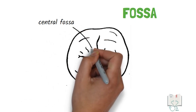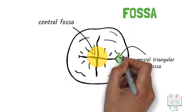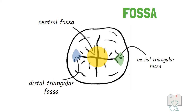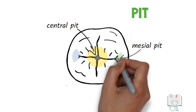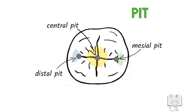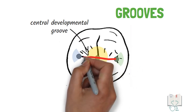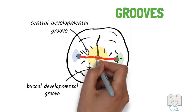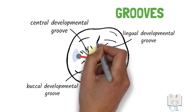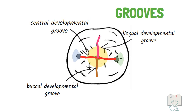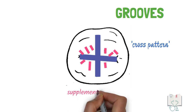The fossae include one central fossa, almost circular in shape in the center of the occlusal surface, a mesial triangular fossa next to the mesial marginal ridge, and a distal triangular fossa adjacent to the distal marginal ridge. There is a central pit in the central fossa, a mesial pit in the mesial triangular fossa, and a distal pit in the distal triangular fossa. The central developmental groove extends from the mesial pit, runs through the central pit, and ends in the distal pit. The buccal developmental groove runs from the central pit between the two buccal cusps onto the buccal surface, and the lingual developmental groove runs from the central pit between the lingual cusps onto the lingual surface. These three grooves make a cross pattern dividing the occlusal surface into four almost equal parts. Numerous supplementary grooves are also present.